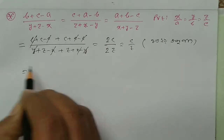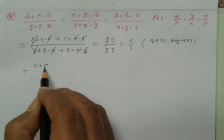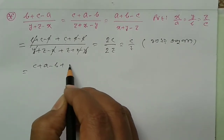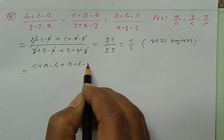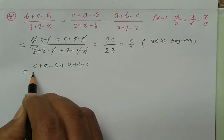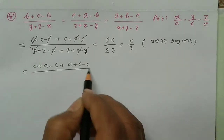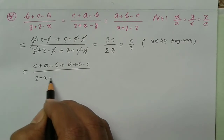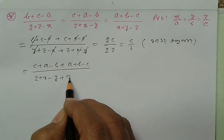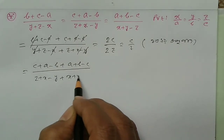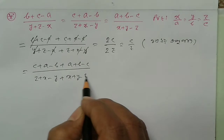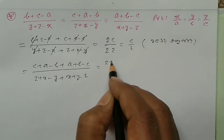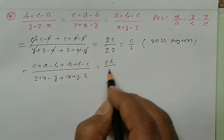Next we get C plus A minus B, plus A plus B minus C by Z plus X minus Y, plus X plus Y minus Z, which equals 2B by...